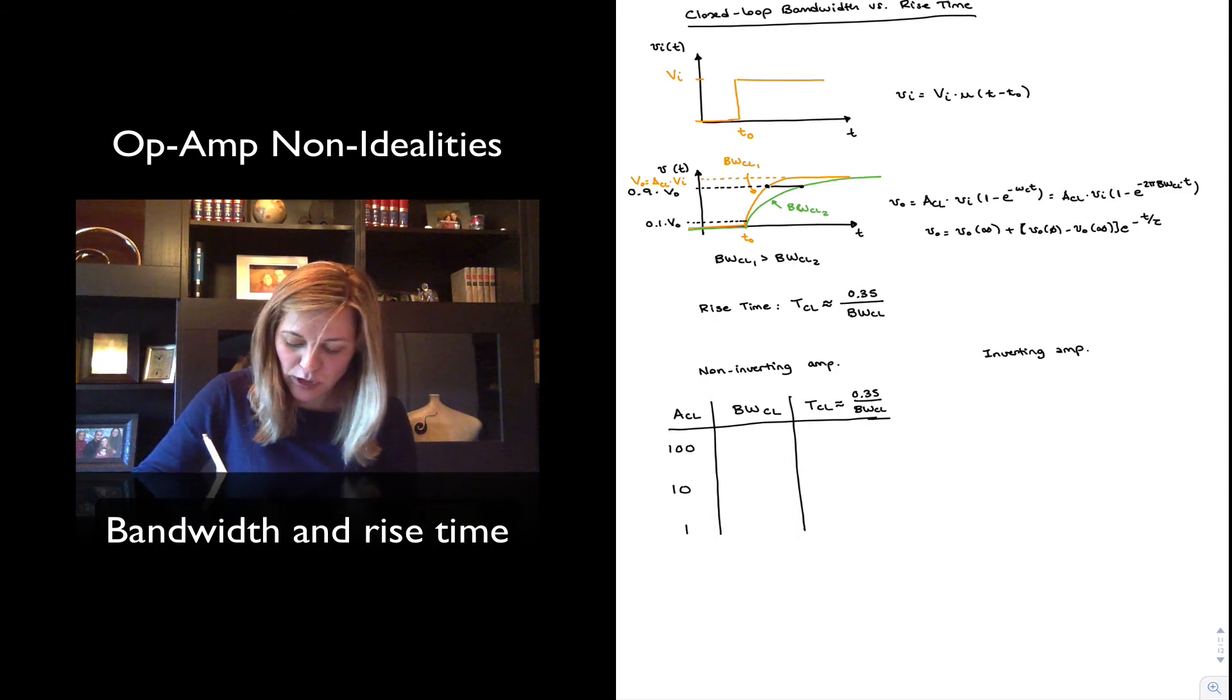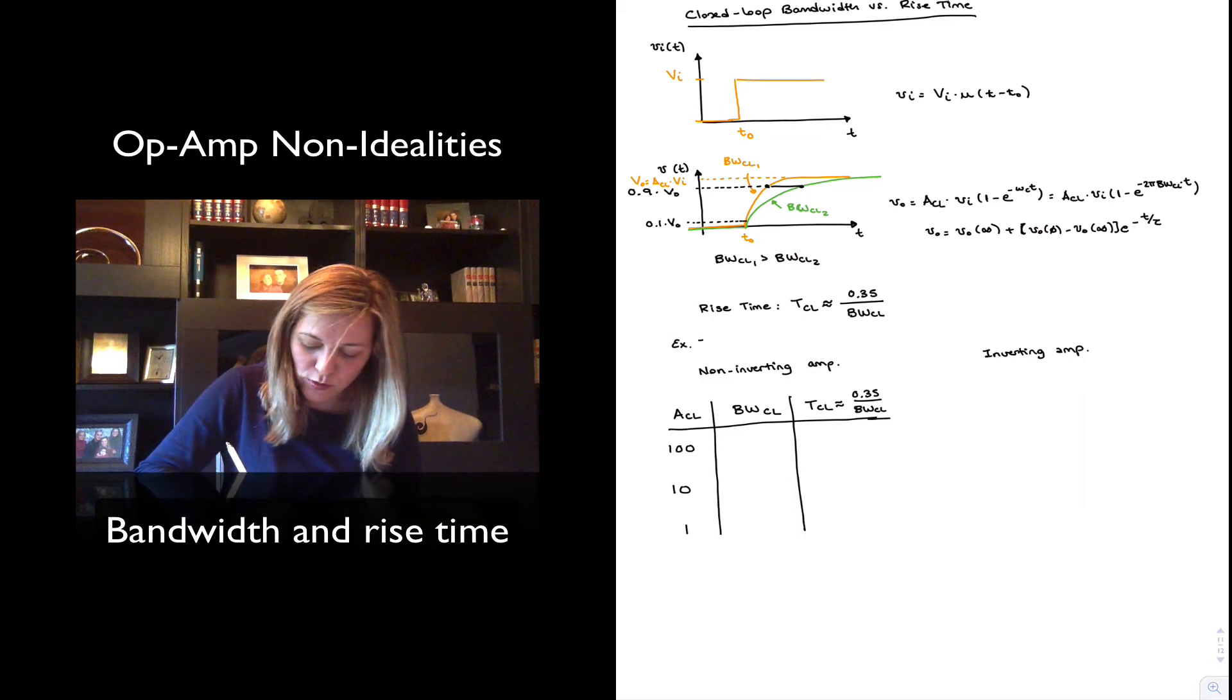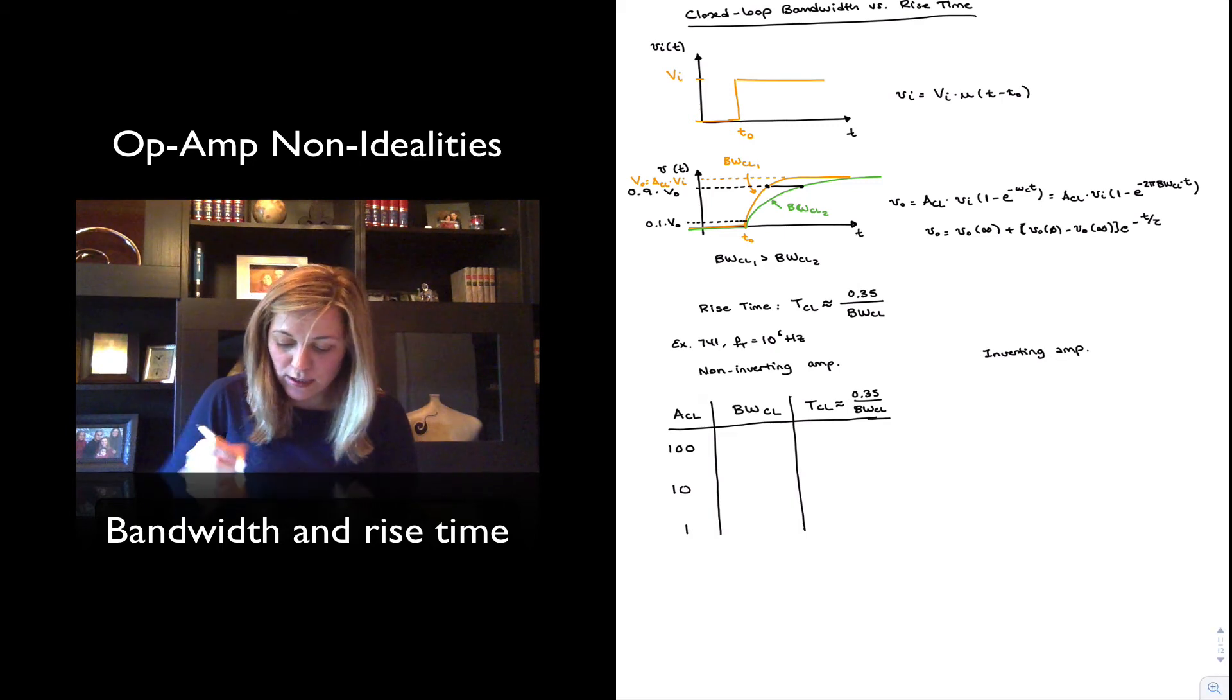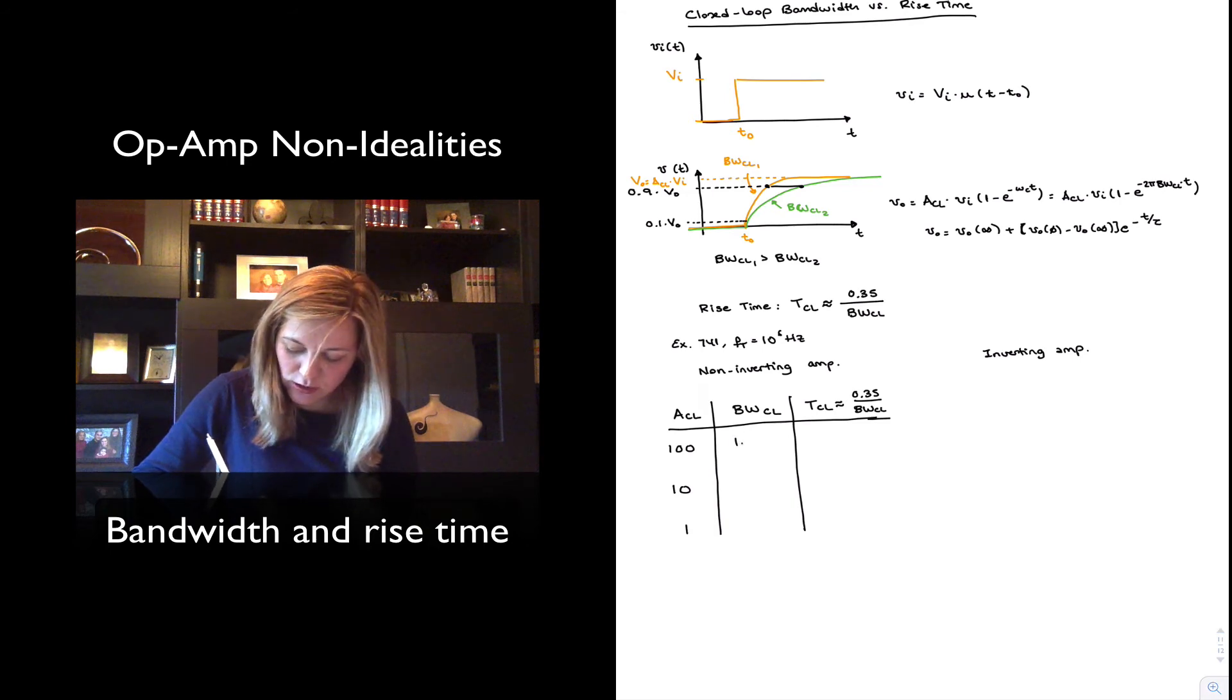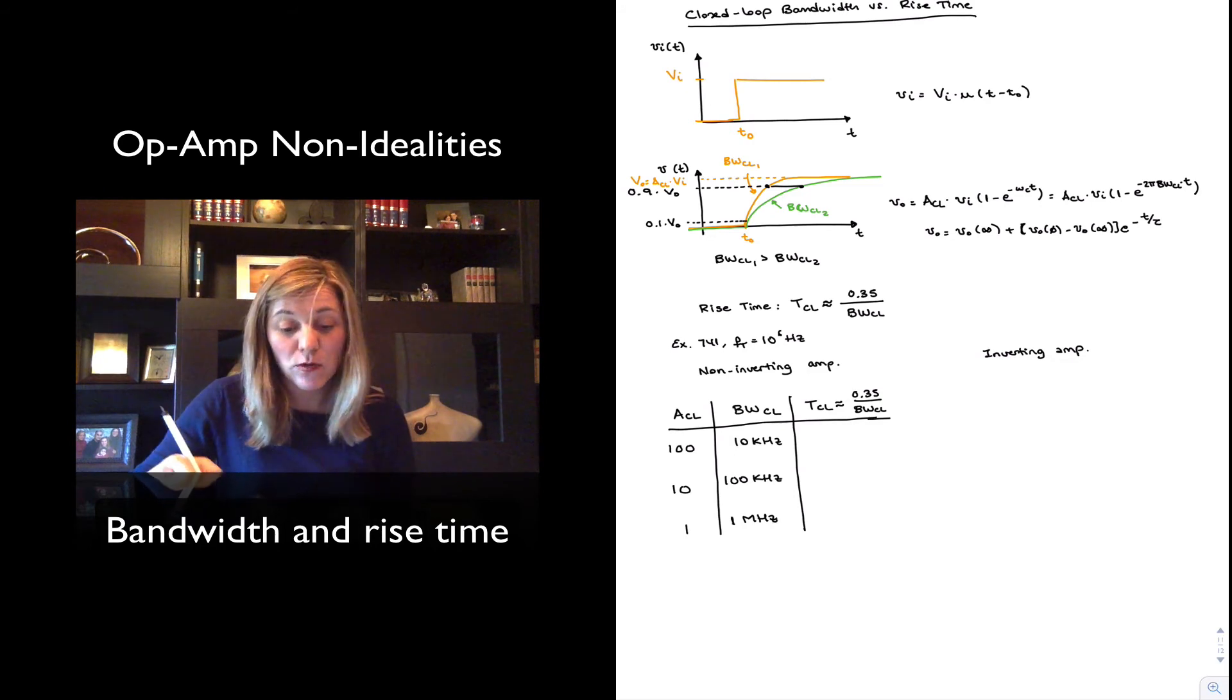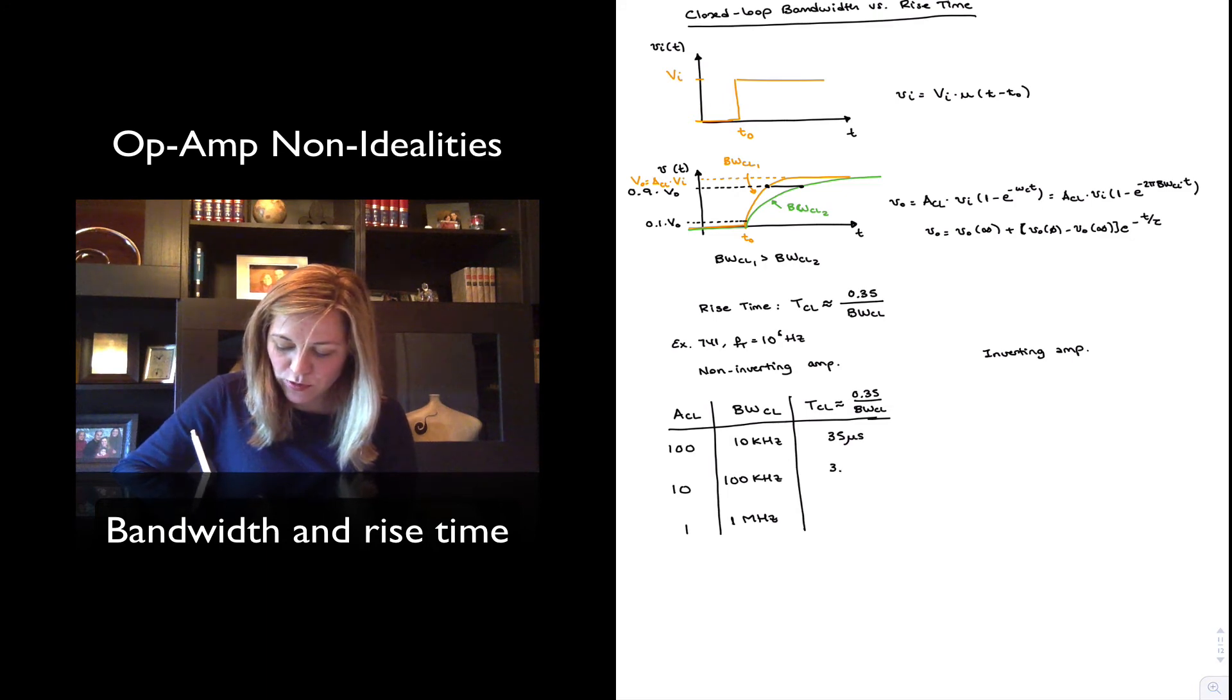We calculated earlier the closed loop bandwidth for a 741. So I'm going to say this is an example with a 741, where Ft is 1 megahertz, or 10 to the 6 hertz. So we have calculated our closed loop bandwidth to be 10 kilohertz, 100 kilohertz, and 1 megahertz. And from that, we can just directly apply that equation and calculate our rise times as 35 microseconds, 3.5 microseconds, and 0.35 microseconds.